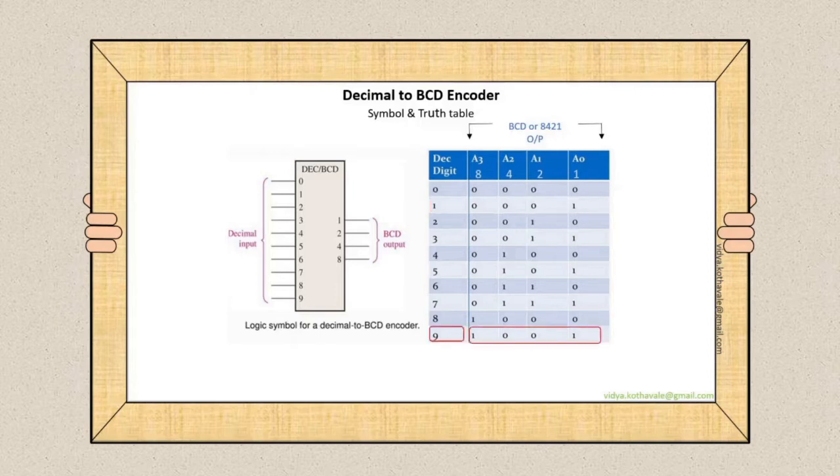And this is how if decimal input line number 9 is activated, then we get the corresponding BCD output as 1001.